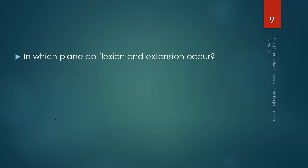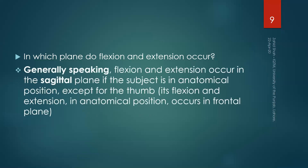A question for you: in which plane do flexion and extension occur? We discussed three types of planes — medial plane, frontal plane, and transverse plane. The answer is that flexion and extension generally occur in the sagittal plane, or medial plane, when the subject is in anatomical position.